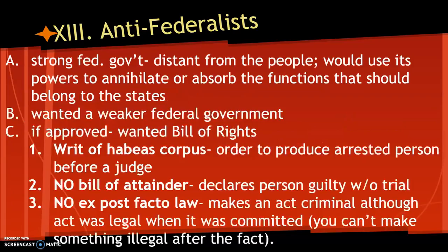On the flip side, the Anti-Federalists believed a strong federal government would be distant from the people and would annihilate or absorb functions that needed to belong to the states. They wanted a weaker federal government and would only agree to ratification if a Bill of Rights was included. They wanted a writ of habeas corpus — an order that if you're going to be arrested you must have a court order — no bills of attainder (a person declared guilty without a trial), and no ex post facto laws.